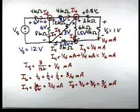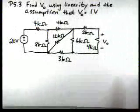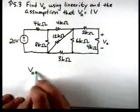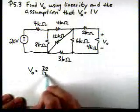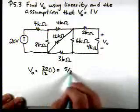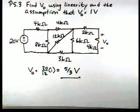So now if we go back to our original circuit and it says, well, suppose VS is 20, by linearity, then V0 would be 20 over 12 times 1 or 5 thirds of a volt.